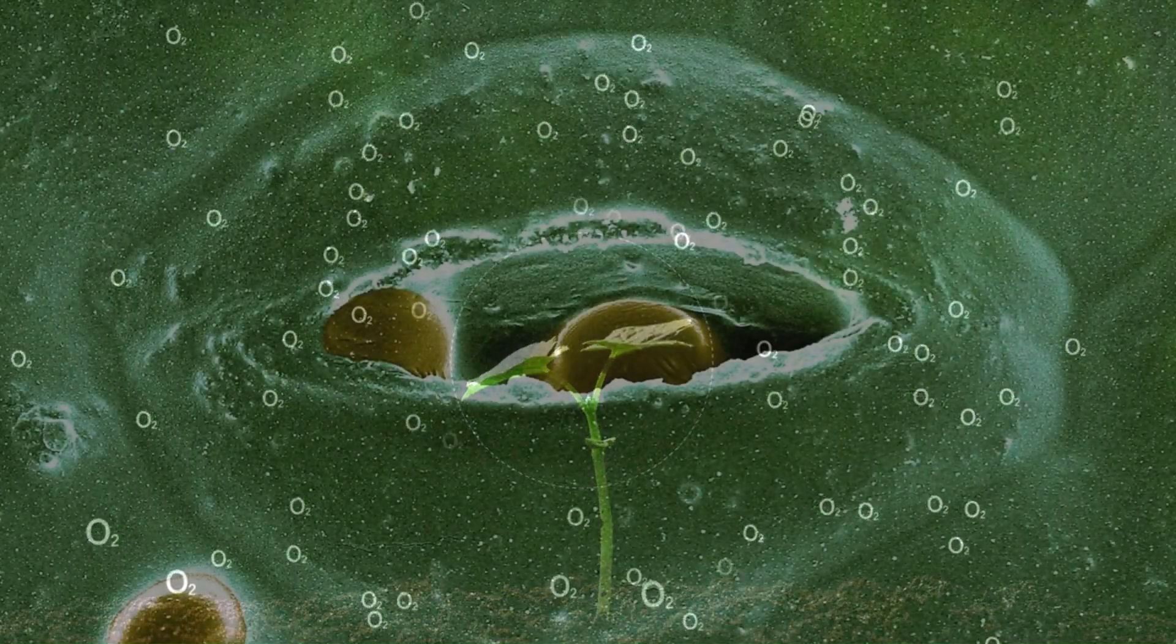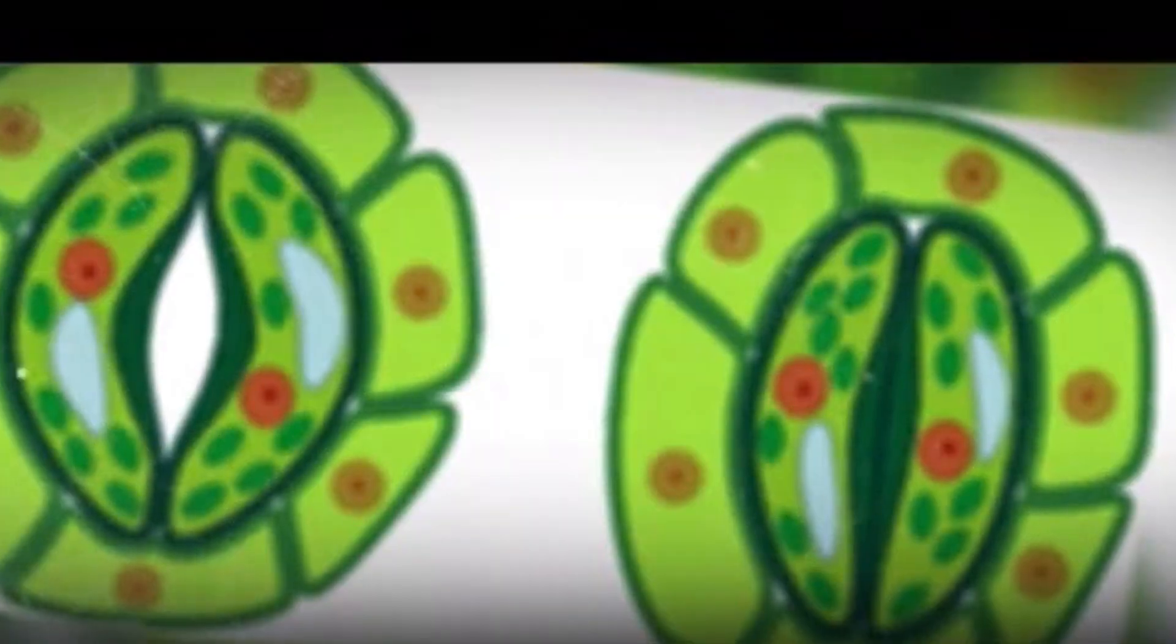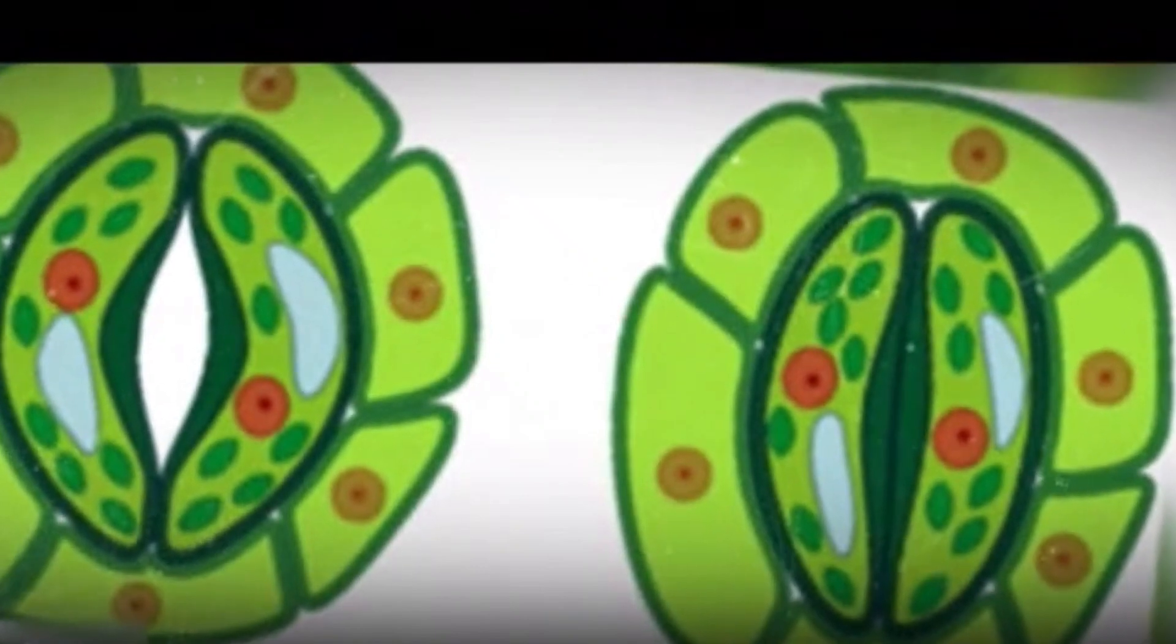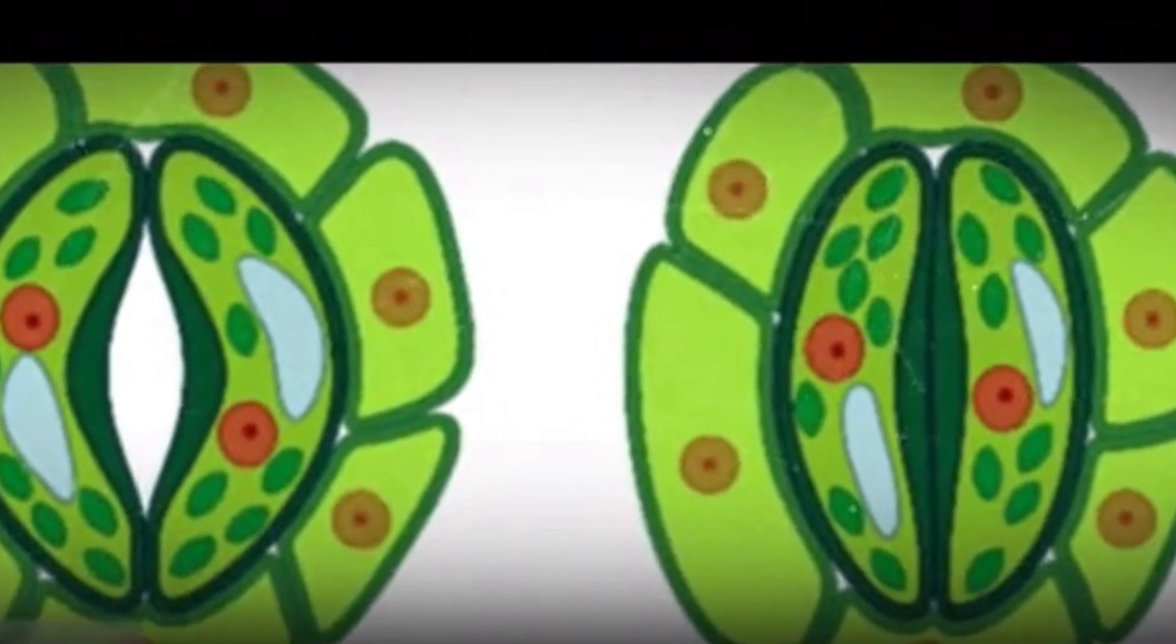Each stoma is flanked by a pair of guard cells. These cells are like tiny bouncers, controlling who gets in and out. When the guard cells are full of water, they swell up and open the pore. But when they lose water, they shrink and close it. Simple yet genius.